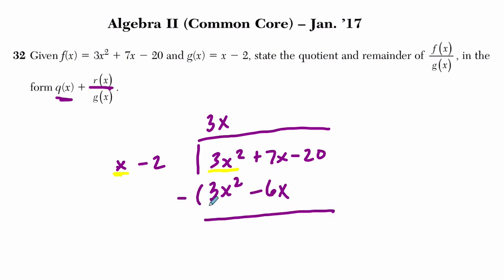Then we subtract to see if we've reached our full goal of f(x), this full trinomial, or to find out what's left in this case. 3x squared minus 3x squared is 0. Then 7x minus a negative 6x is 7x plus 6x. It's 13x.